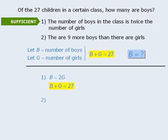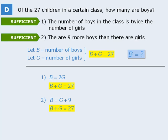Now on to statement 2. Here we are told that the number of boys is 9 more than the number of girls. So we can write that B is equal to G plus 9. Once again, if we add the information we derived earlier, we have two equations which we could use to solve for B. So statement 2 is sufficient, which means our answer is D.